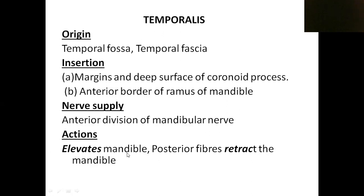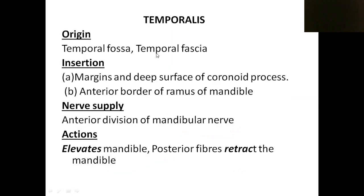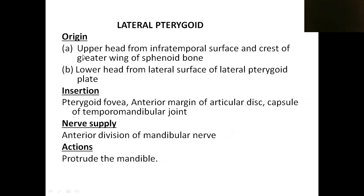The temporalis is also supplied by the anterior division of the mandibular nerve. The action has two components: the anterior fibers are vertical, so when they contract they elevate the mandible; the posterior fibers run horizontally forward, so when they contract they retract the mandible. So temporalis has two actions — anterior fibers elevate, posterior fibers retract.